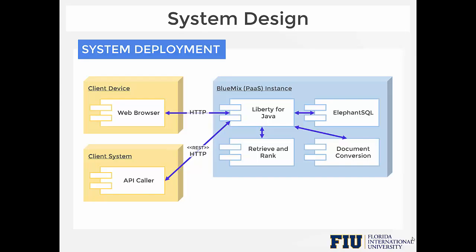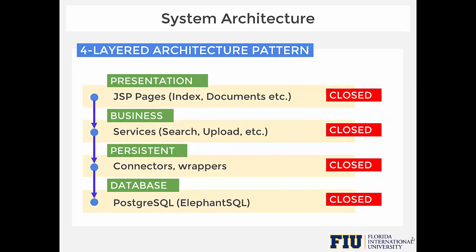All of these services are integrated on the Bluemix platform. Our system has a four-layered architecture. The presentation layer contains all user interface and user experience components. The business layer includes the logic of all services offered by the application. The persistent layer contains data access components such as connectors and wrappers. The database layer stores all persistent information of the application. All layers in the system are closed, meaning each layer can only access the layer right next to it.